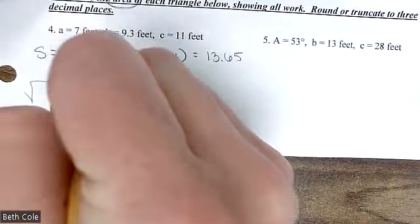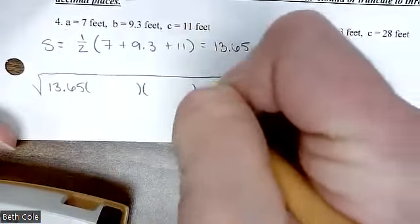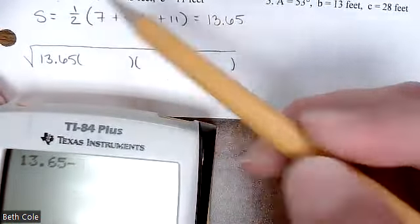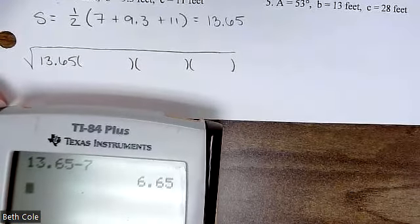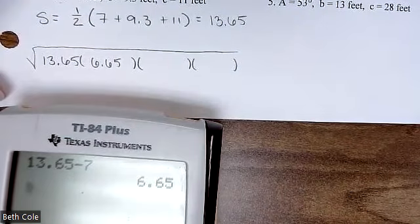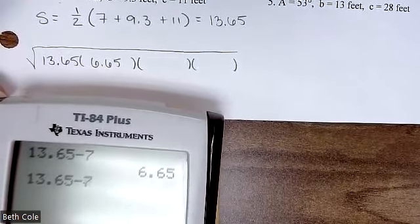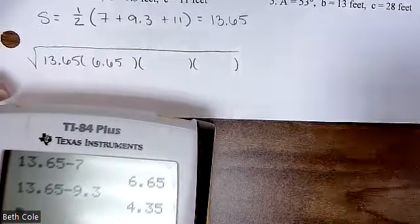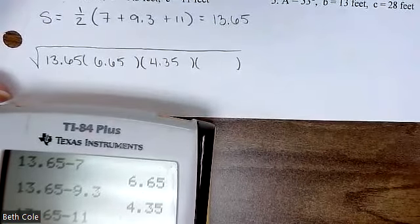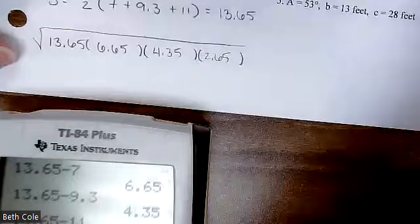You're going to draw a gigantic square root sign. Underneath, put 13.65, then three sets of parentheses. In the first one: 13.65 − 7 = 6.65. Then 13.65 − 9.3 = 4.35. Then 13.65 − 11 = 2.65. Type that whole thing in and that's your answer.